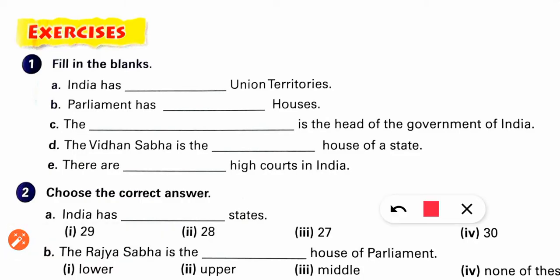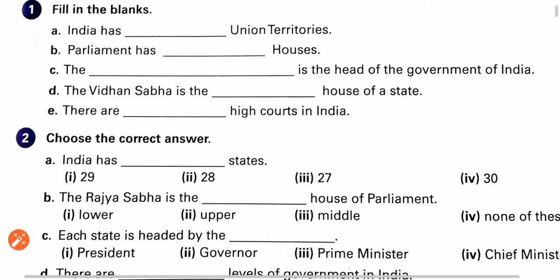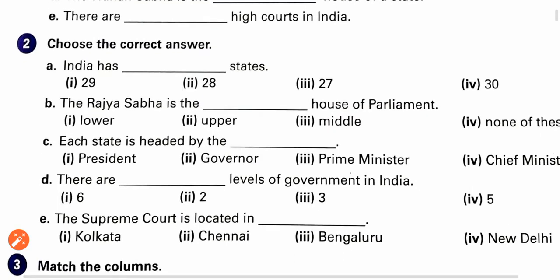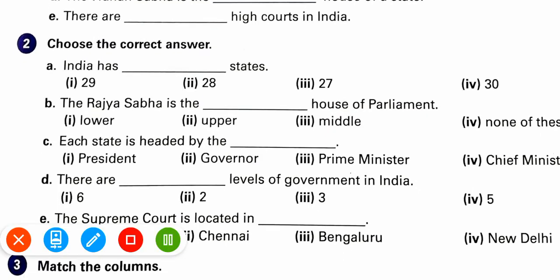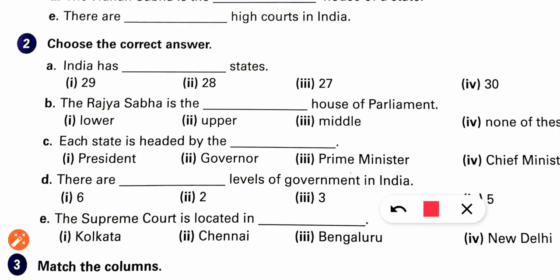Next exercise: Choose the correct answer. India has how many states? If you look at the book, then 29. But current 2020, then how many states are there? 28.